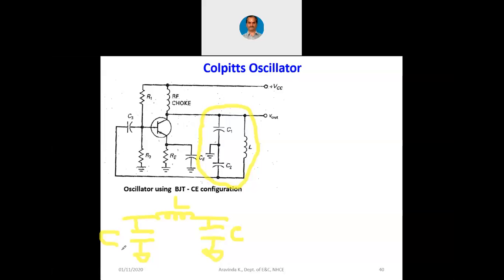At the input side is C2, at the output side is C1. From the output, C1 is connected to ground; then there is inductance from output to input; and at the input, C2 is connected to ground. Even though C3 is there, C3 is only a coupling capacitor. Why is C3 used here?